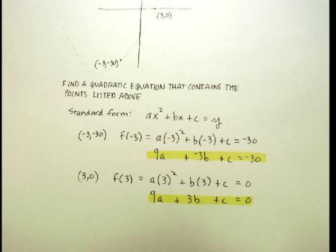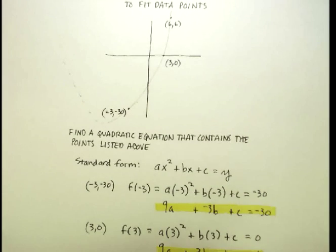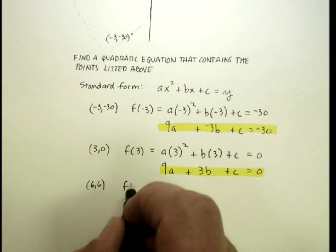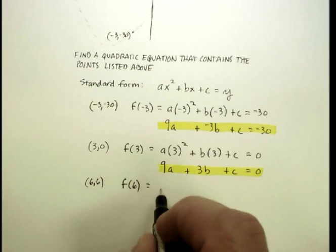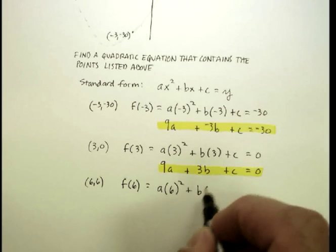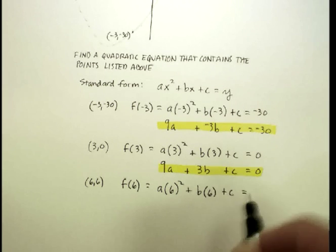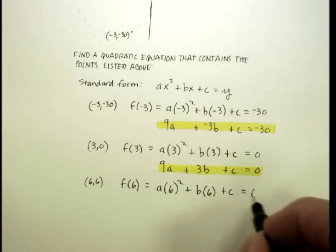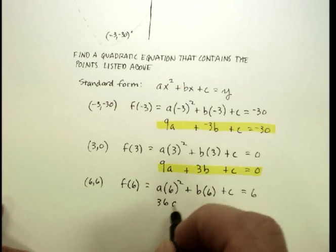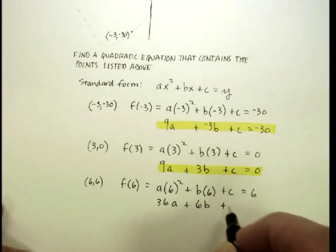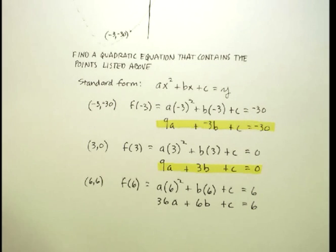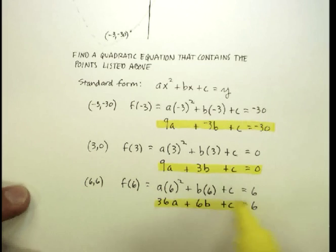I'm going to do it again with the top point, which was (6, 6). Let's try that. So I'm going to say the function of 6, put that into the equation. So a times 6² + b times 6 + c is going to produce the y value here, which is still 6. Lots of 6s in this one. That's going to give me 36a + 6b + c = 6. And that's my third equation in my 3 by 3 system of equations.